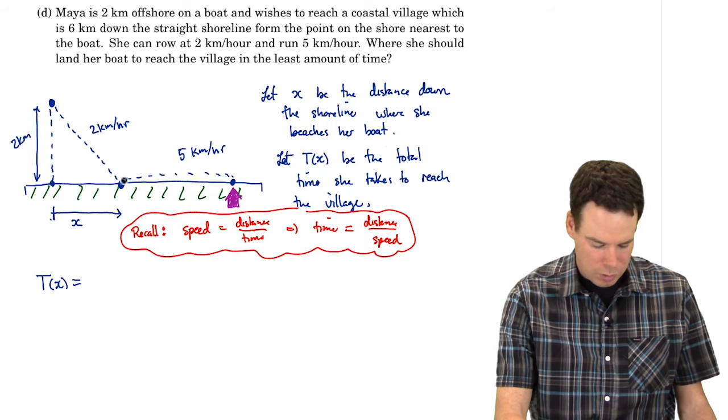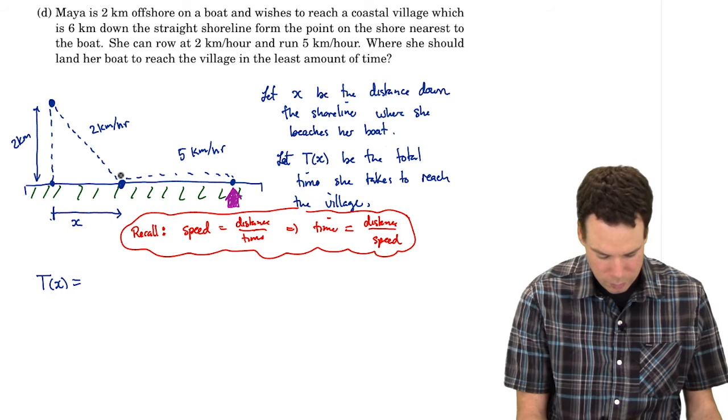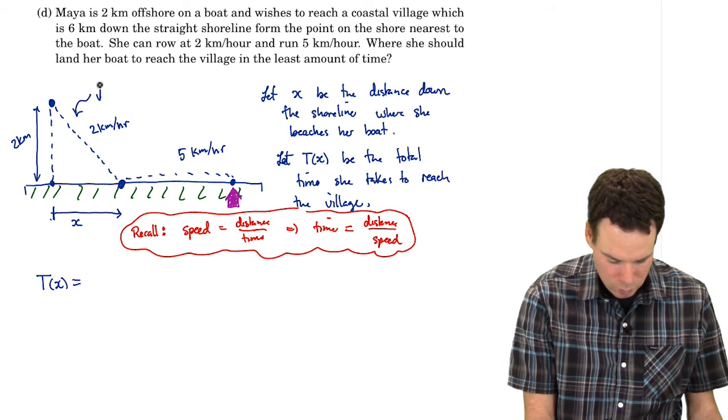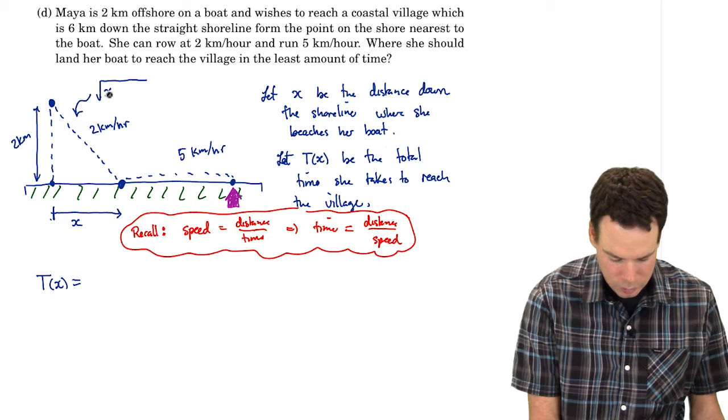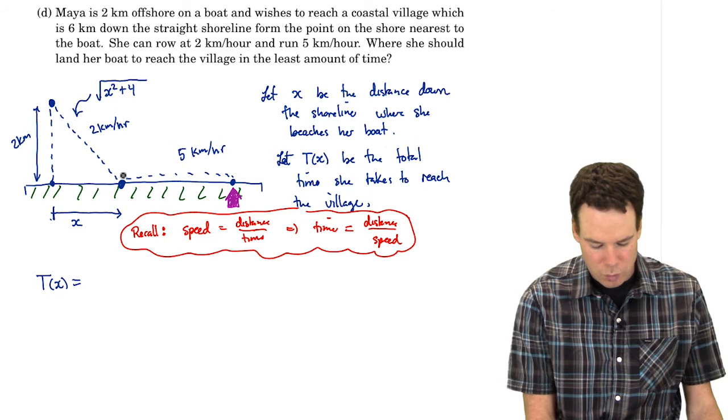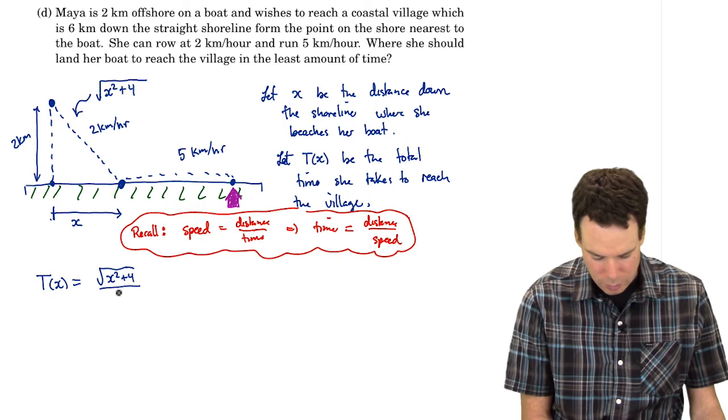So what is our time? Our time is I need to know how far this distance is before she reaches her boat and then I need to divide it by the velocity. How far is that distance? Well there's a right triangle here. So I know that this distance here is going to be the square root of the sum of the squares of the other two sides. So it's x squared plus 4. So the time she spends rowing is the distance she rows divided by the speed at which she can row.